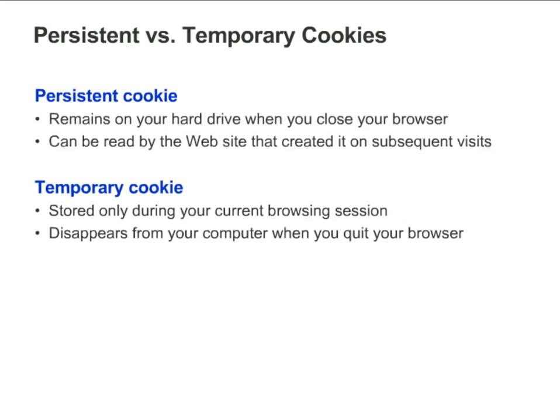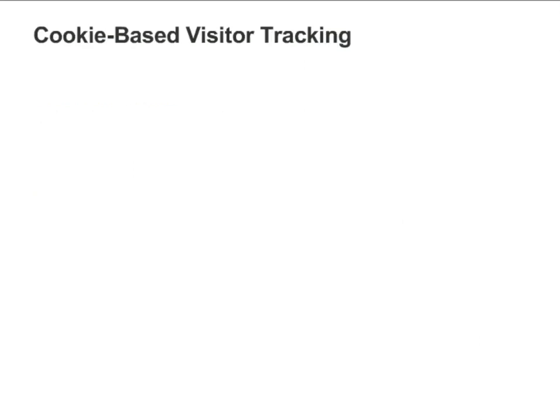Temporary cookies do not have an expiration date as they are only stored for the duration of your current browser session. As soon as you quit your browser, temporary cookies are destroyed. While it's impossible to determine the exact number of web visitors who have cookies enabled or disabled, available statistics suggest that the vast majority of visitors enable cookies.